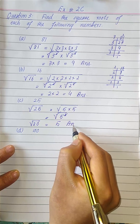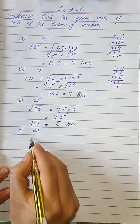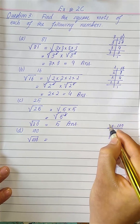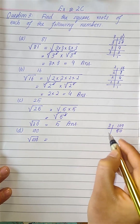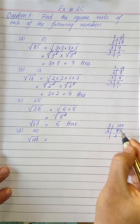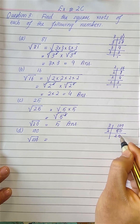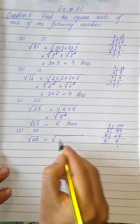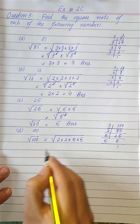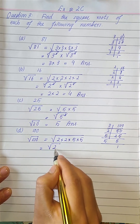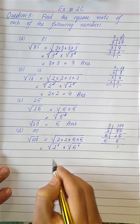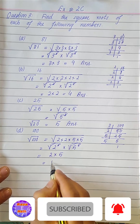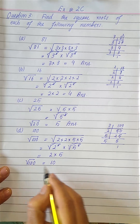In part D we have 100, so we need to find the square root of 100. We factorize 100: dividing by 2 and then by 5 gives us 2 times 2 times 5 times 5. This can be written as the square root of 2 raised to the power 2, times the square root of 5 raised to the power 2. The squares cancel with the square roots, leaving 2 times 5, which equals 10. So the square root of 100 equals 10.